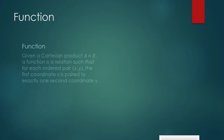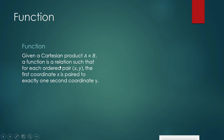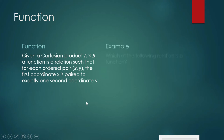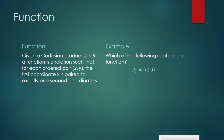A function is a special kind of relation. It is a relation such that for each ordered pair (x, y), the first coordinate x is paired to exactly one second coordinate y. A function is a relation but with a special characteristic: the first coordinate is paired to exactly one second coordinate. Let us go back to the relations from the previous example and identify which of those is a function.